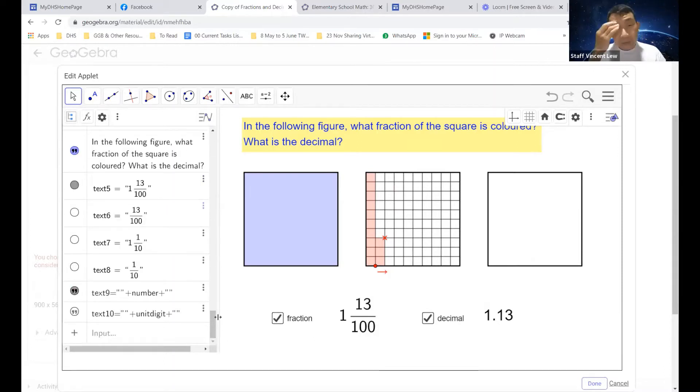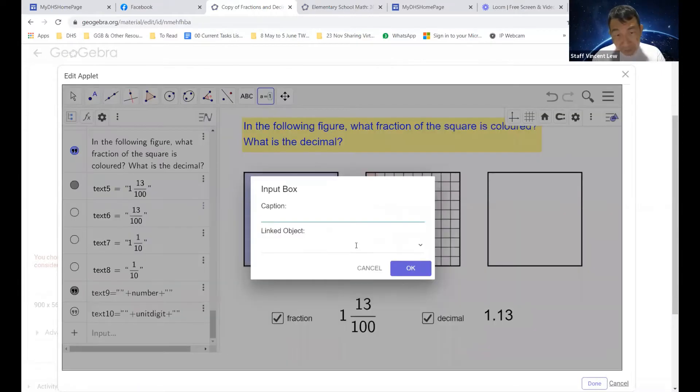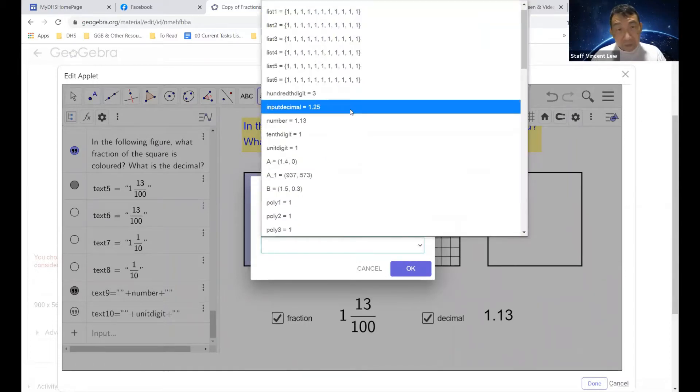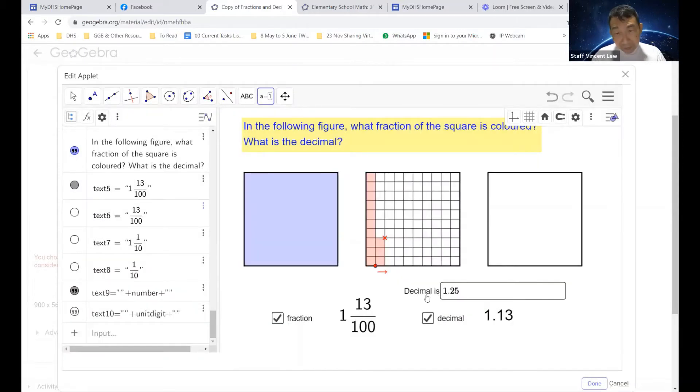Now we're going to create an input box. Like this, input box. We'll just place it just below, just above the decimal. We're going to call it decimal is, and we're going to link it to the object which is input decimal. I'm going to click okay.